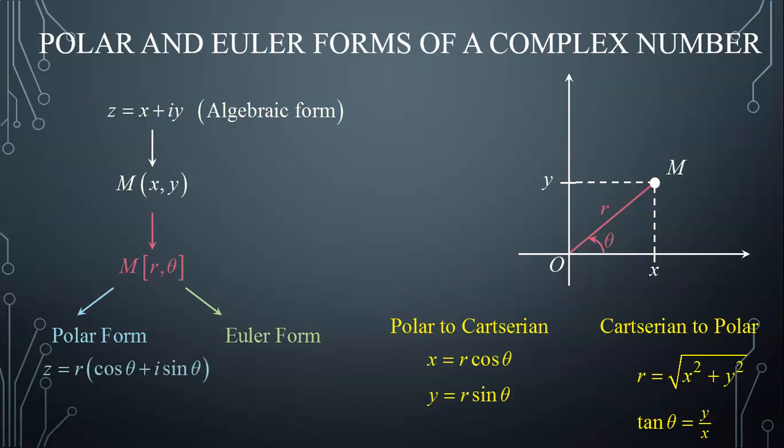Now, the polar form consists of writing Z in the form R times cosine θ plus i sine θ, because of the fact that X equals R cosine θ and Y equals R sine θ, which could also be abbreviated into R times cis θ. The cis is just an abbreviation of cosine plus i sine.